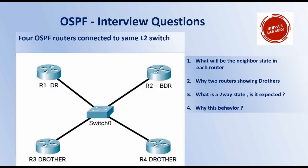Let's look at the scenario where we have four routers connected to the same L2 switch, which is the same broadcast domain. The question will be: what will be the neighborship state on each router when you give 'show IP OSPF neighbor'? In this scenario, one router will be selected as DR (designated router) and another as BDR (backup designated router). The other two routers will be shown as DR others.